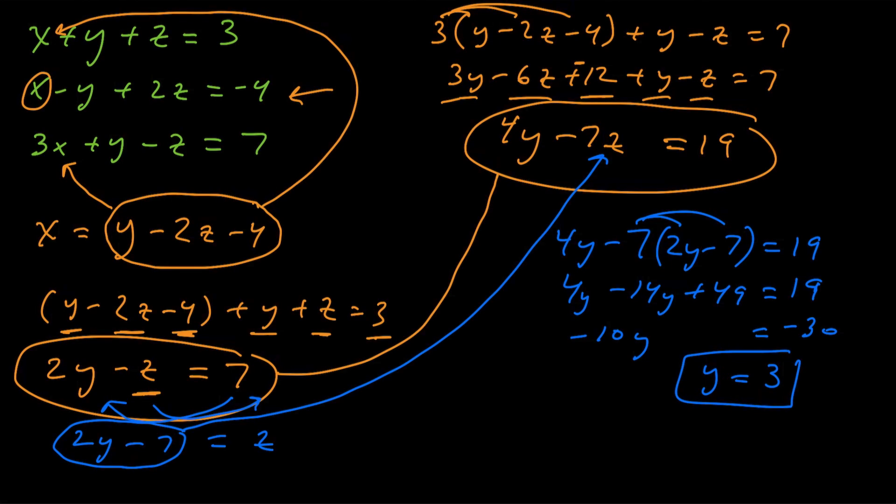So you can see what we did is we did the substitution method twice, really. Once when we had the three variables, three equations, and then we solved for one of the variables again when we had the two variables, two equations.